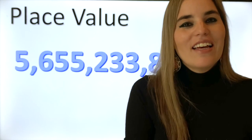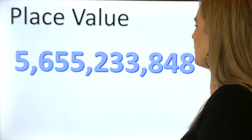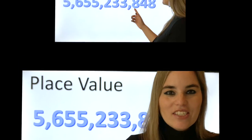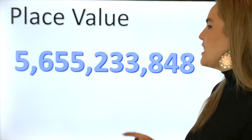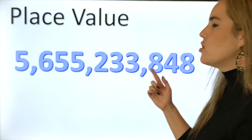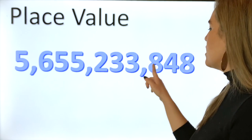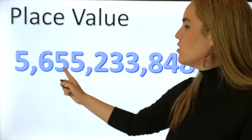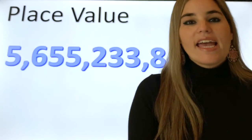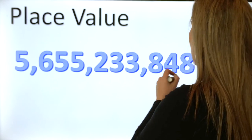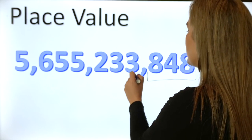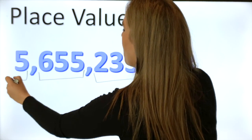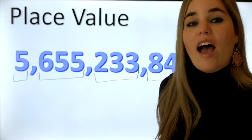Now we're gonna see a number to the billions. We have this huge number — do you even know how to read it? If you don't, I'm gonna teach you how. As you can see, these numbers are divided by periods: one, two, three digits, comma, one, two, three digits, comma, one, two, three digits, and another comma. Each group of three digits is called a period. We have the ones, the thousands, the millions, and the billions.